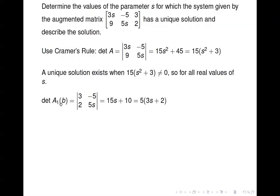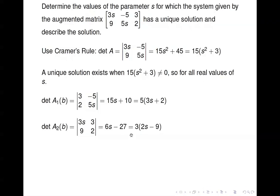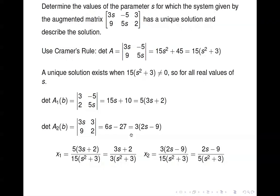To describe the solution we can use Cramer's Rule. I've computed A_1(b): take b = [3, 2] and stick it in the first column of A, compute that determinant. Then A_2(b): stick the right-hand side in the second column and compute that determinant. Massaging things, we get x_1 = 5(3s + 2) / det(A) and x_2 = 3(2s − 9) / det(A) for any value of s.